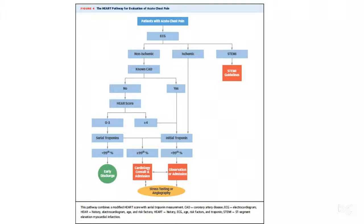If there is a concern that the chest pain is non-ischemic, the recommendation is to first look at the history of coronary artery disease. If there is a history of CAD, you get the first set of troponins. If the troponins are positive — meaning the value is more than the 99th percentile, around 18 to 19 — that is also the definition for myocardial injury.